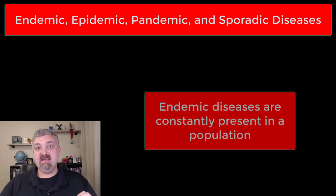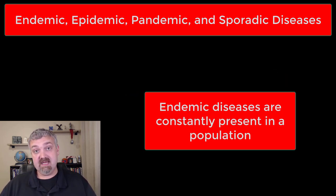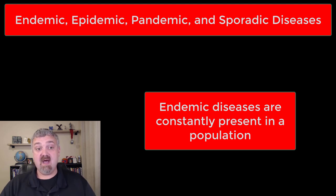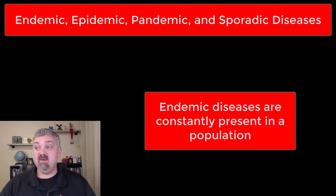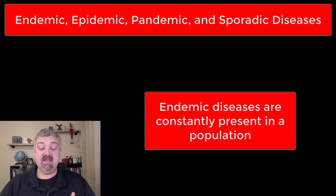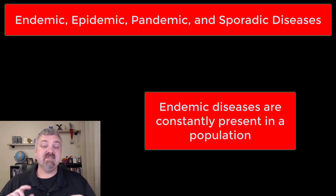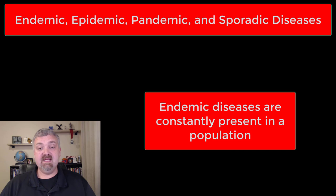An endemic disease is a disease that's constantly present in the population. The first thing that comes to mind would be malaria in some parts of Africa — it is just endemic to those regions, it's always there. Same thing with HIV infection in Sub-Saharan Africa. Those are examples of endemic diseases that are constantly present in a population.